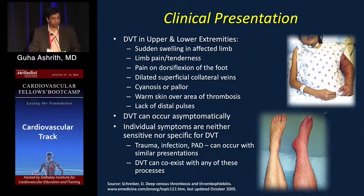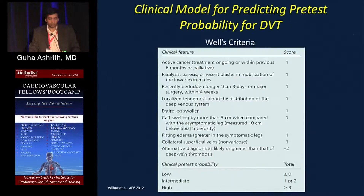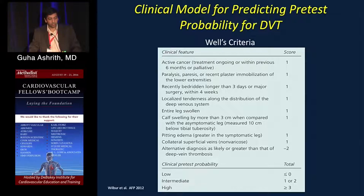Patients with DVT present with swelling, redness, and occasionally lack of distal pulses. You always look for underlying causes and coexisting conditions, as these inform your pretest probability. Factors include active cancer, immobilization, recent bedridden status, along with clinical signs like leg swelling, calf swelling, tenderness, and whether an alternative diagnosis exists.